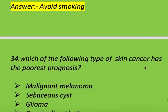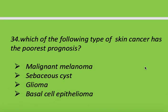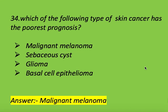Next question: which of the following types of skin cancer has the poorest prognosis? Options: malignant melanoma, sebaceous cyst, bleomycin-related, and basal cell epithelioma. Right answer is malignant melanoma. Malignant melanoma has the poorest prognosis.